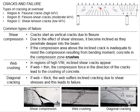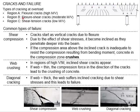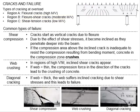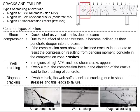Flexural cracks are vertical cracks developed from the soffit of the beam, propagating upward with increasing loads. Region B represents flexural shear cracks, which start as flexural cracks propagating vertically upward, but somewhere along the way the crack changes direction to become slightly inclined. The third type is the shear tension crack, which normally appears at the support where there is a high degree of shear load, and the cracks are normally inclined.